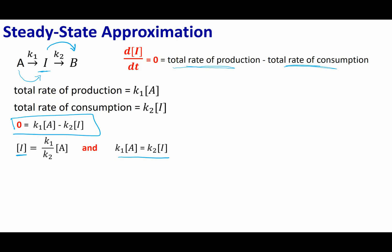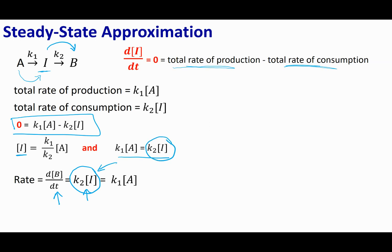Let's go ahead and get a rate. If I want to say what is the rate of this overall reaction, I can look at B, and the rate is going to be dB/dt. What's making B? The production of B is going to be K2 times [I]. But I don't want to use this as the rate law because it has an intermediate. I know that K2 times [I] equals K1 times [A], so I can make that substitution. And so for this proposed mechanism, the overall rate is going to be K1 times [A].